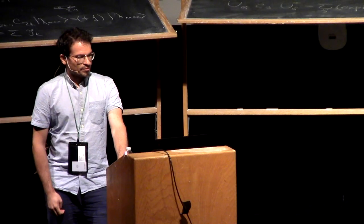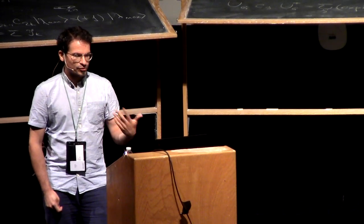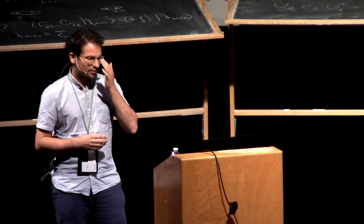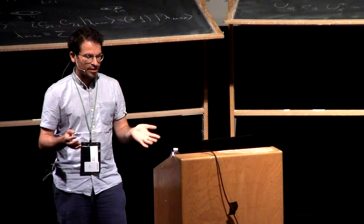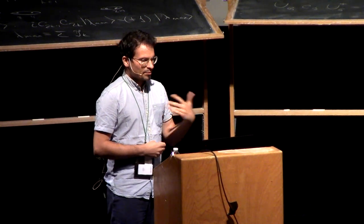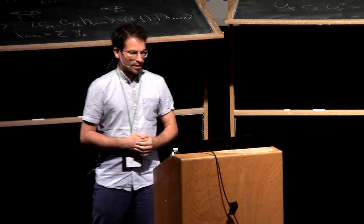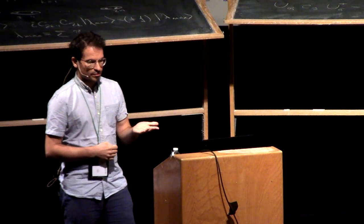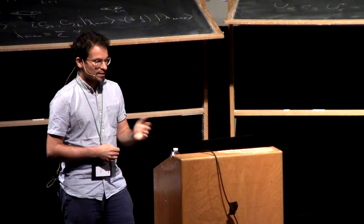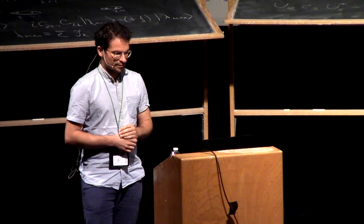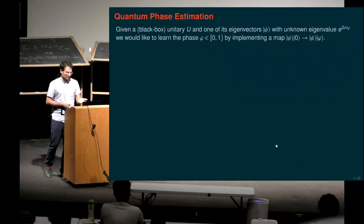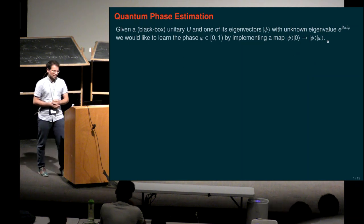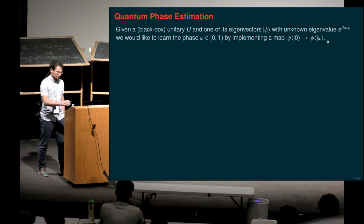So what's phase estimation? The problem is that you are given a unitary U, and we say it's a black box unitary in the sense that we don't assume any extra knowledge about it. We just know that it's unitary and can't exploit its structure, but we can apply it as a quantum circuit. We are also given, for simplicity, an eigenvector psi with some eigenvalue e to the 2 pi i phi, which is unknown to us. We would like to learn this phase phi, which is in 0 and 1, by implementing some quantum operation that writes this phase next to the eigenvector we already have in the quantum computer.